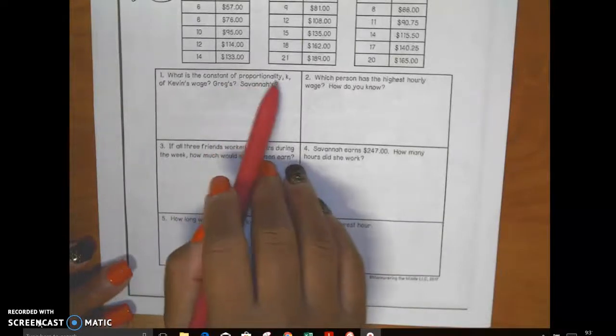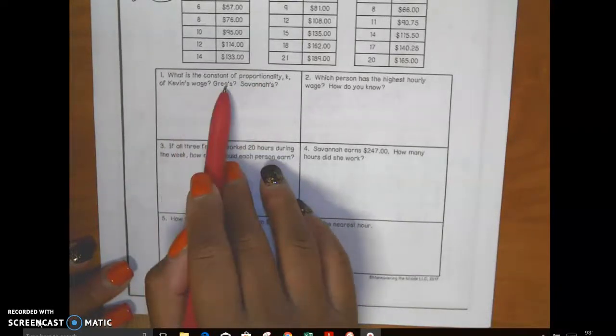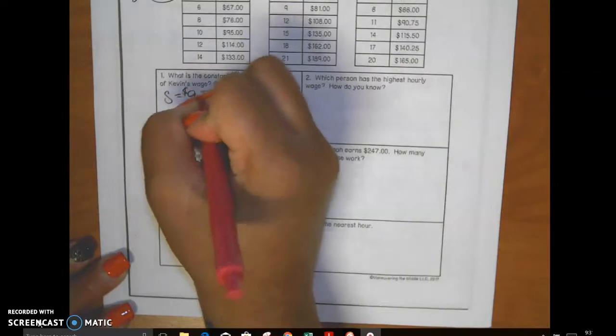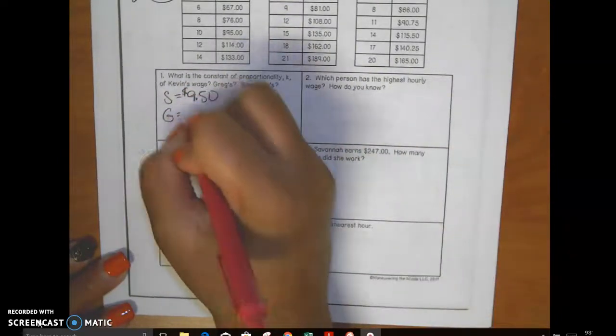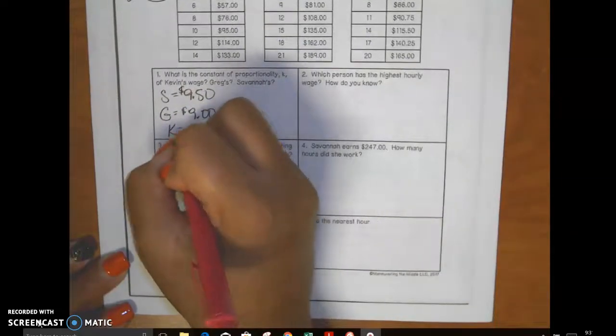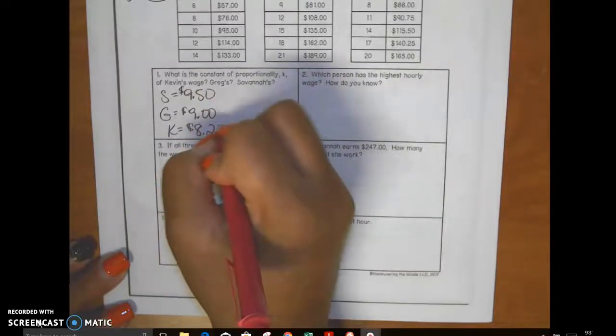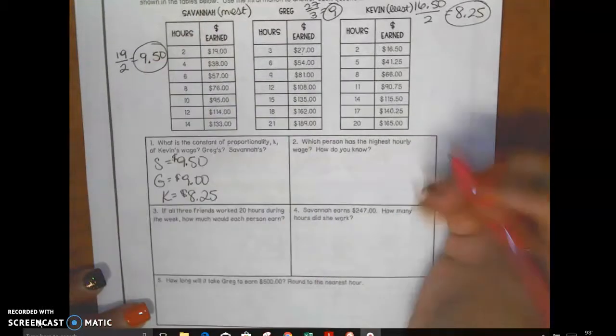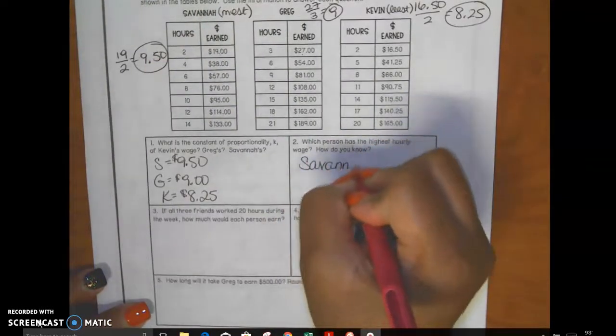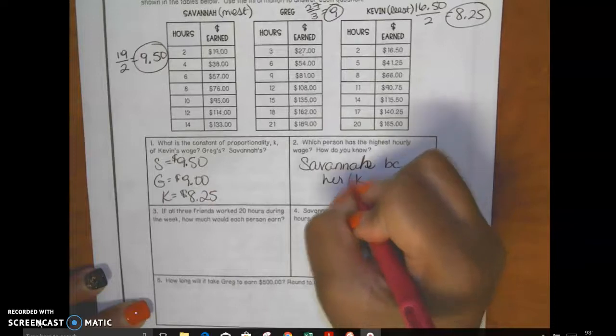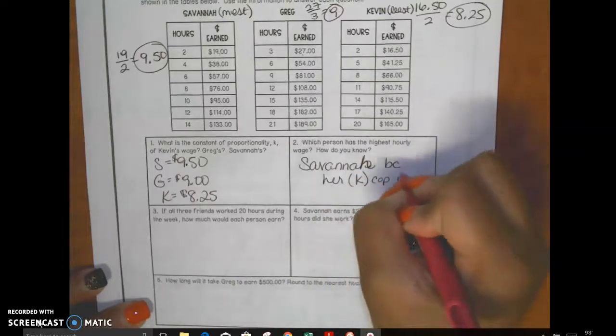What is the constant of proportionality K of Kevin's wage, Greg's wage, and Savannah's wage? I just did that. Savannah gets $9.50 per hour. Greg gets $9.00 per hour. And Kevin gets $8.25 per hour. Which person has the highest hourly wage? I did that already too. Savannah. Because her number is greater. Savannah. Because her constant of proportionality is greatest.